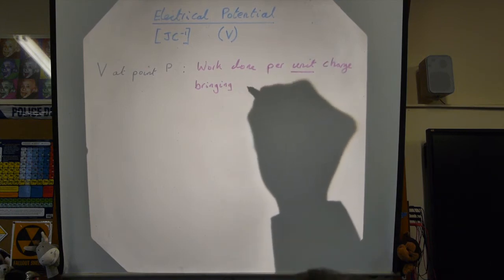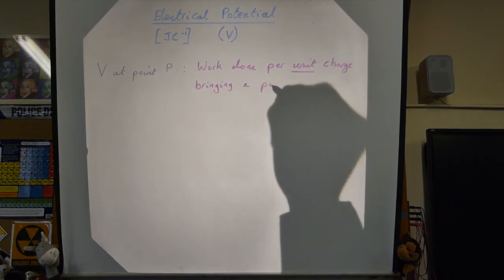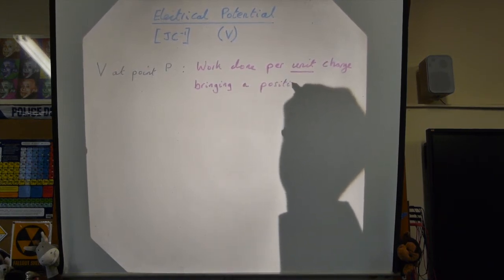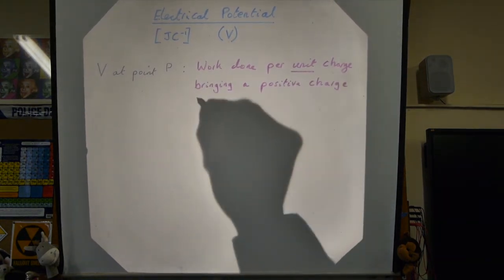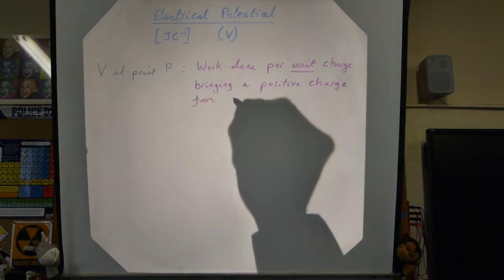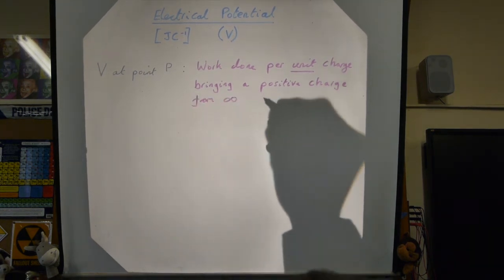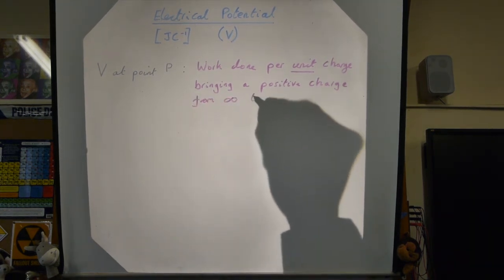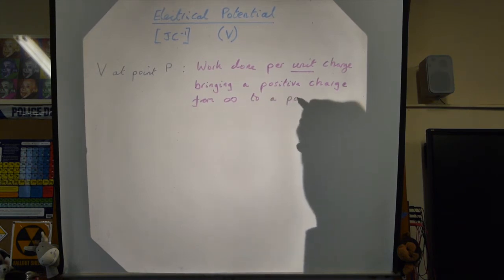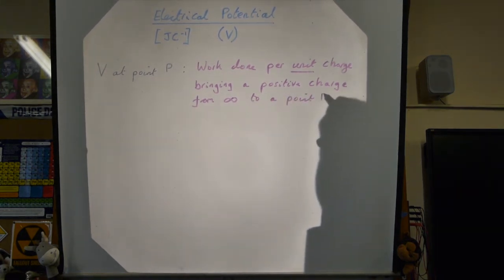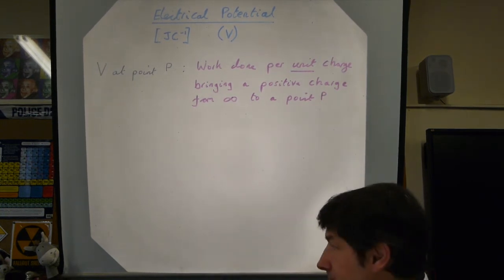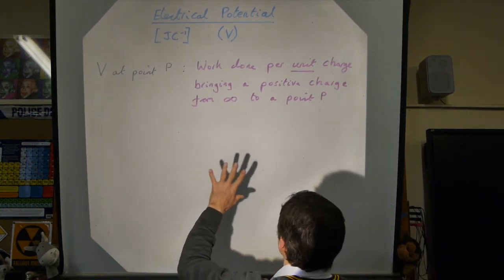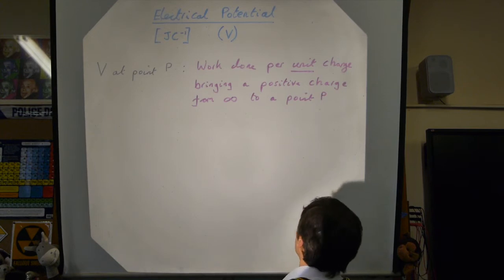It's the work done per coulomb bringing a positive charge from infinity to that point. You might think: what does this all mean and what are the numbers involved?